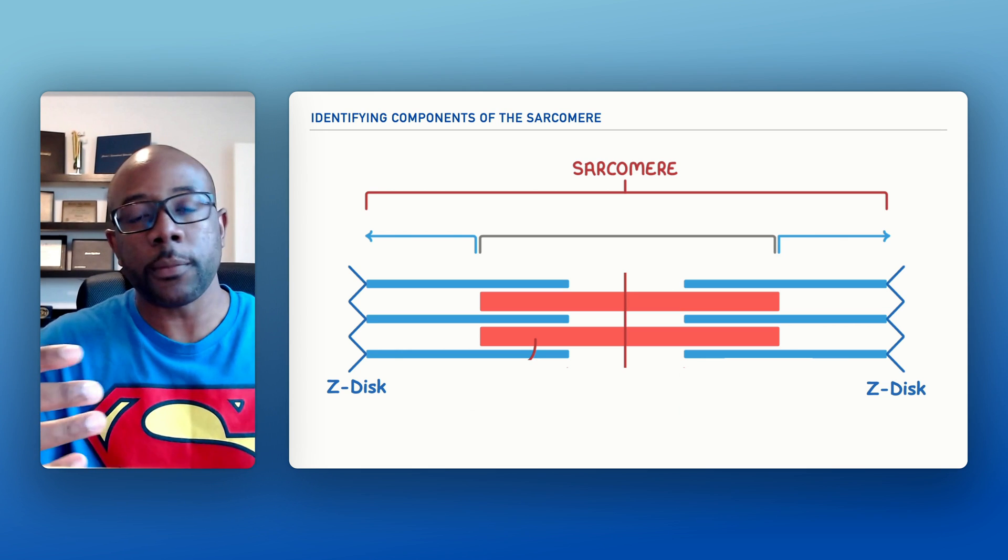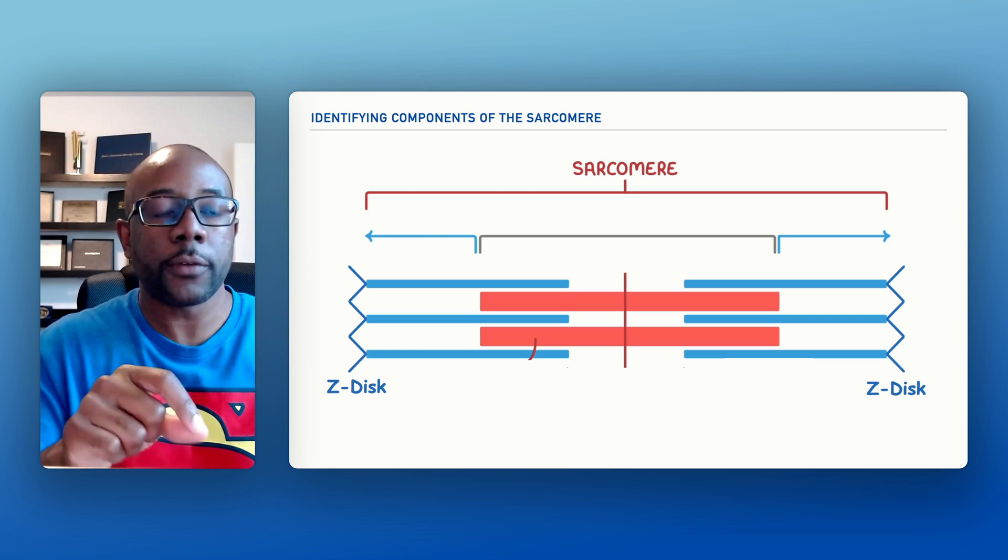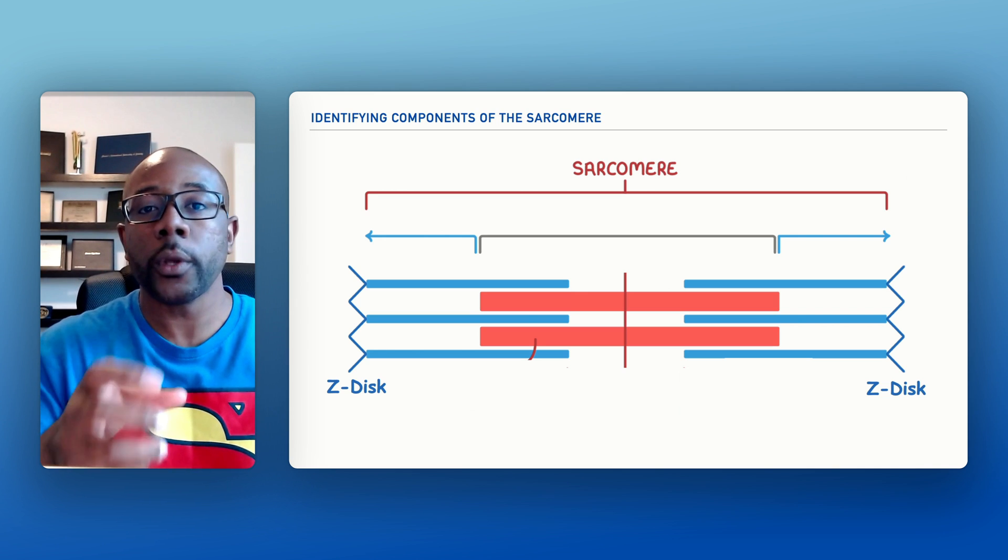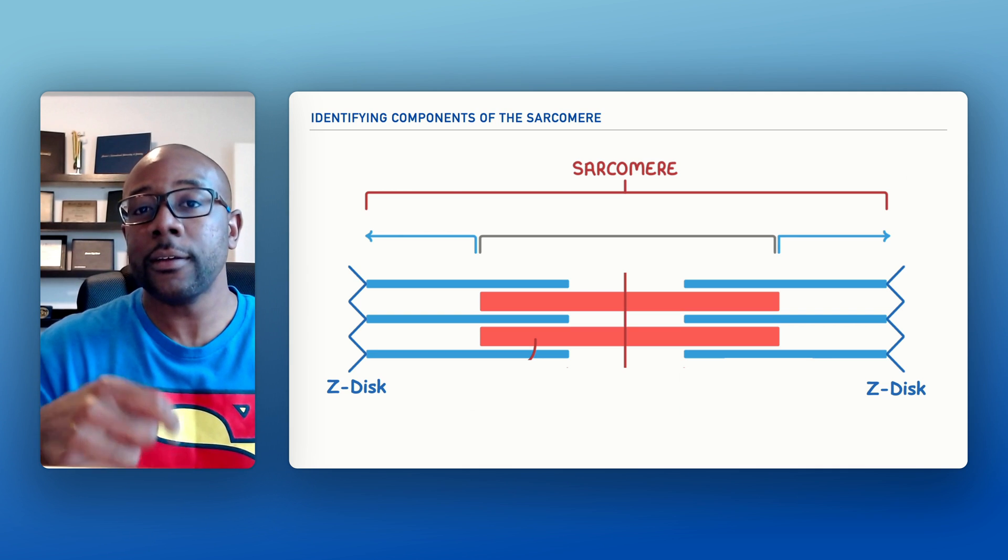Now if you're writing with me, one of the things that you can make note of here is that the Z-disc serves as the anchor for what we call our actin filament.